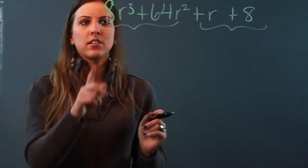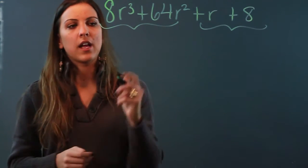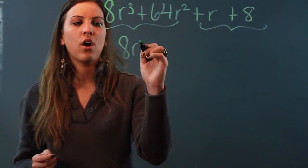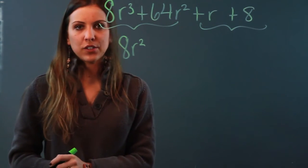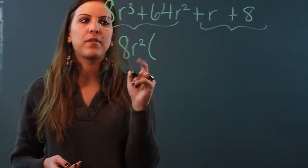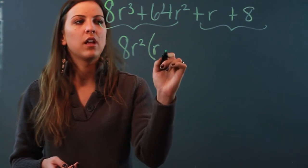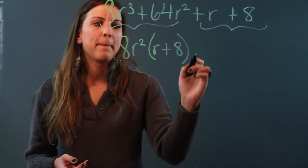So if I try to take the GCF of 8r cubed and 64r squared I'm going to get 8r squared, and when I factor out the 8r squared inside the parentheses I'm going to be left with r plus 8.